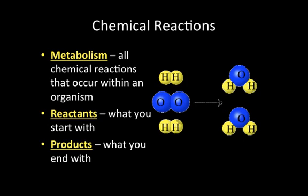In a chemical reaction, you start with reactants and end with products. For example, hydrogen and oxygen are the reactants, and the product is two water molecules. Reactants are at the beginning and products are at the end of a chemical reaction.